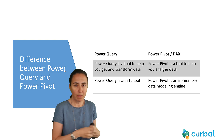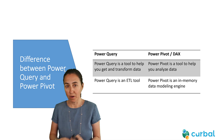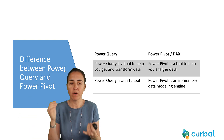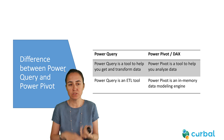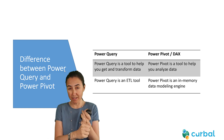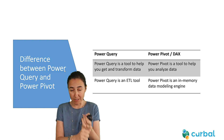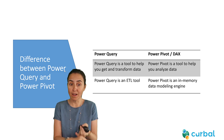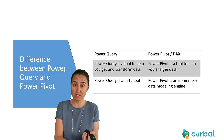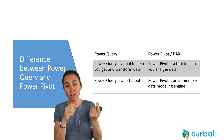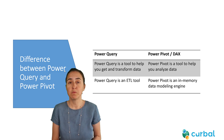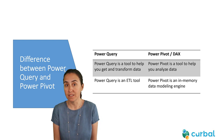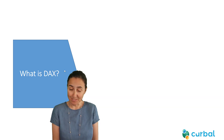What is the difference between Power Query and Power Pivot/DAX? Power Query is a tool to help you get and transform data. Power Pivot or DAX helps you analyze it. Power Query is an ETL tool, and Power Pivot is an in-memory data modeling engine.